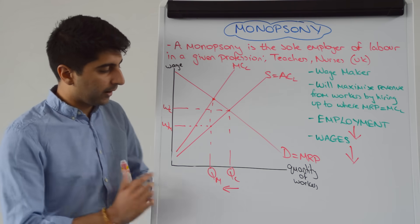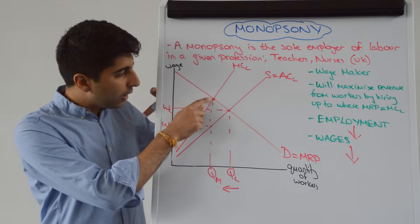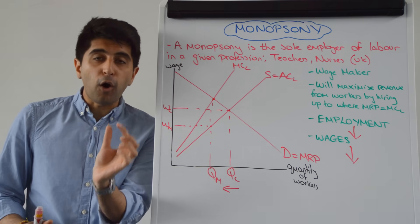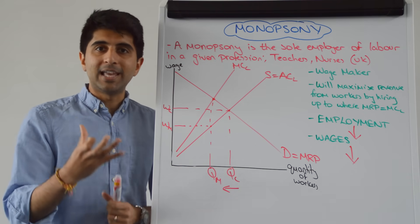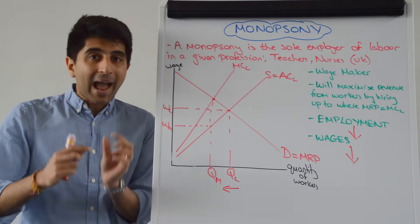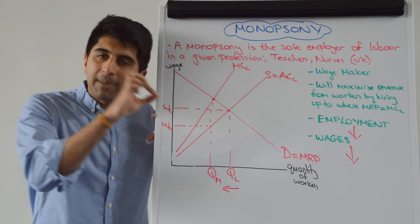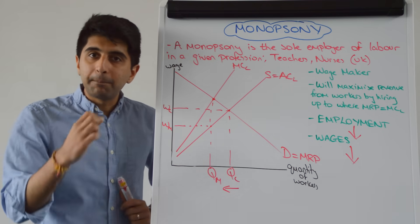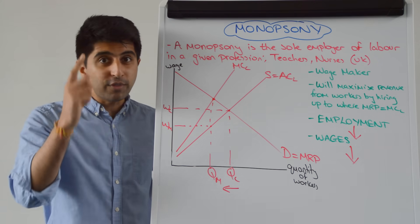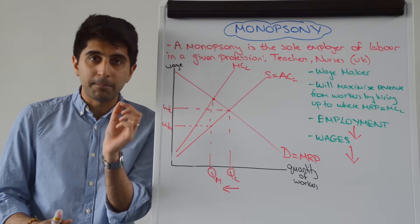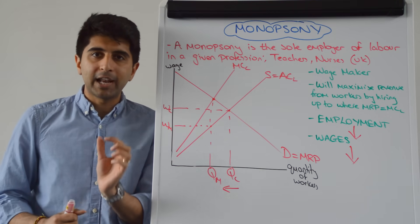We can also see that workers who are employed are being paid a wage WM which is much lower than their MRP. Workers get a really poor deal in a monopsony labour market. In the real world, if we can measure MRP, we can compare how low wages are relative to MRP. The lower the wages are compared to MRP, the greater the monopsony power in that market — and knowing how to evaluate using that is very useful.